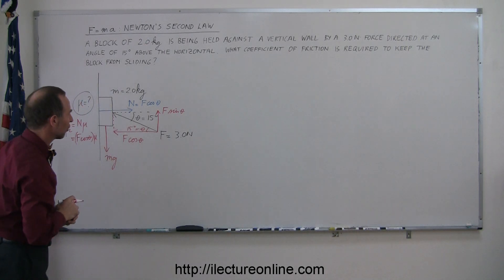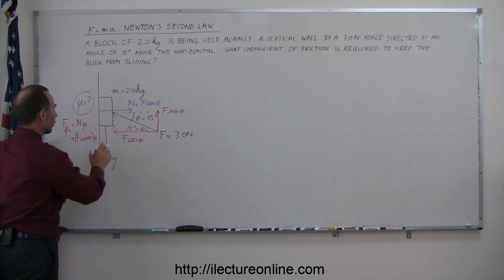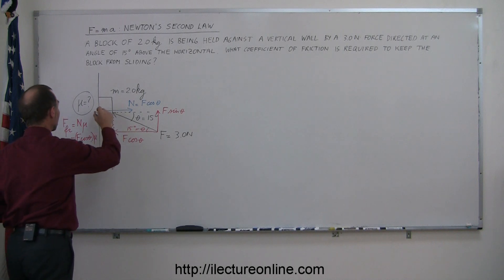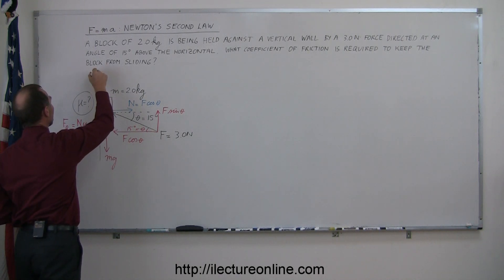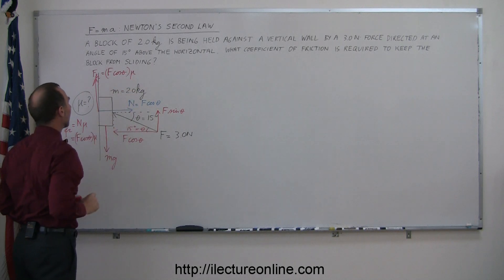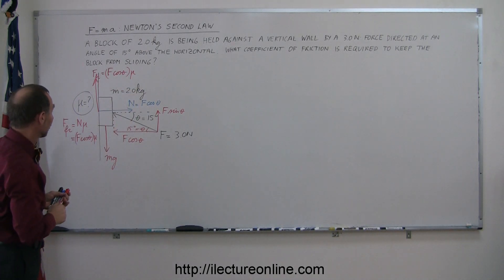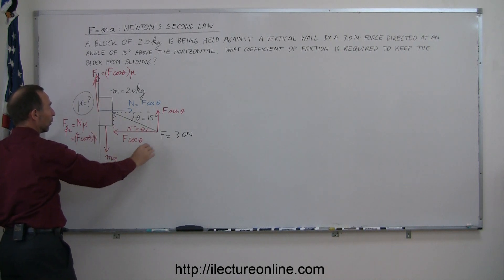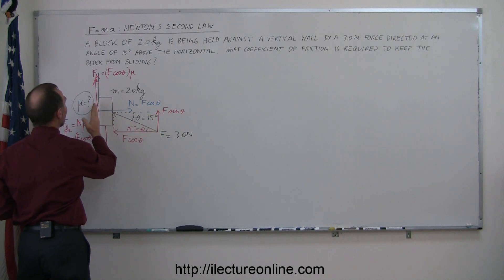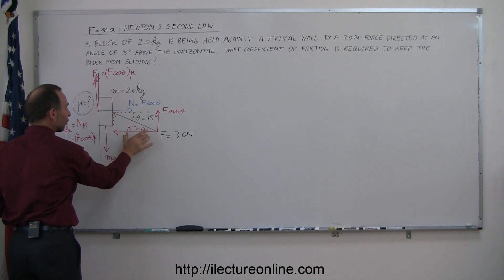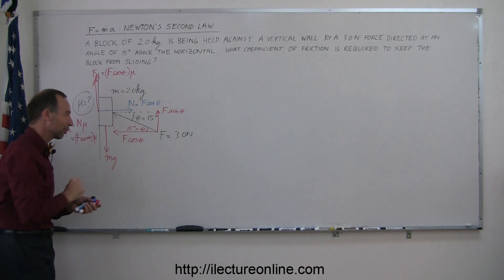As for the direction of the friction force: since without friction the block would slide down, the friction force opposes that motion and acts upward. So the friction force is equal to f cosine theta times mu, directed upward. We now have three forces on the block in the vertical direction: weight pulling down, the component f sine theta pushing up, and the friction force also pushing up, which is caused by the normal force from the horizontal component f cosine theta.